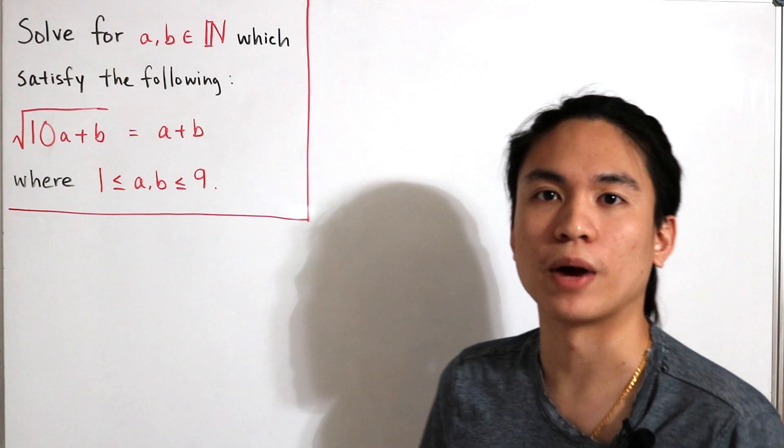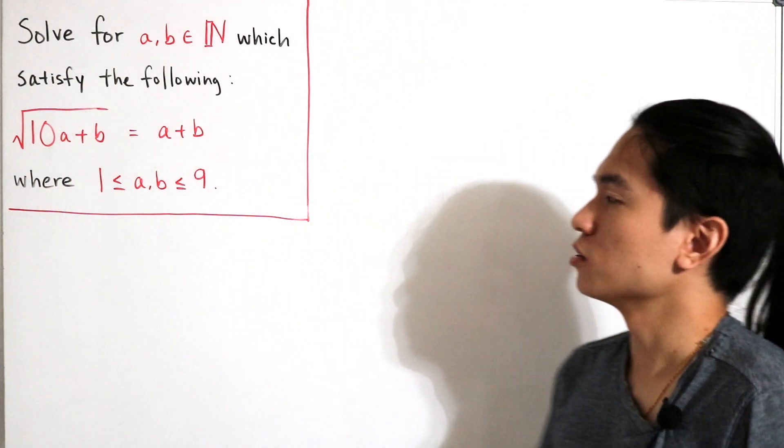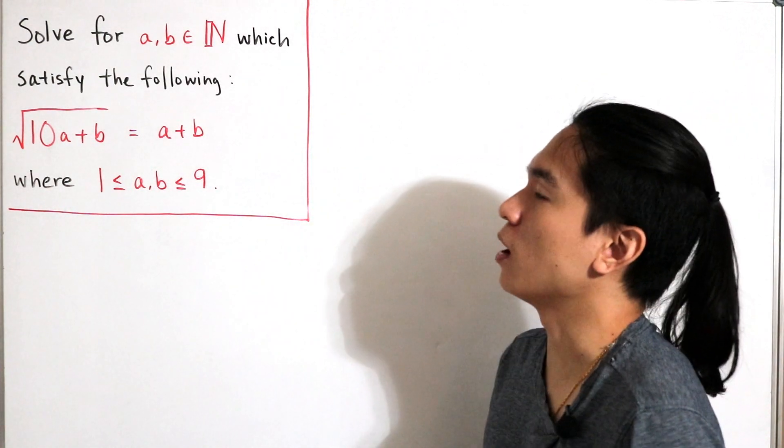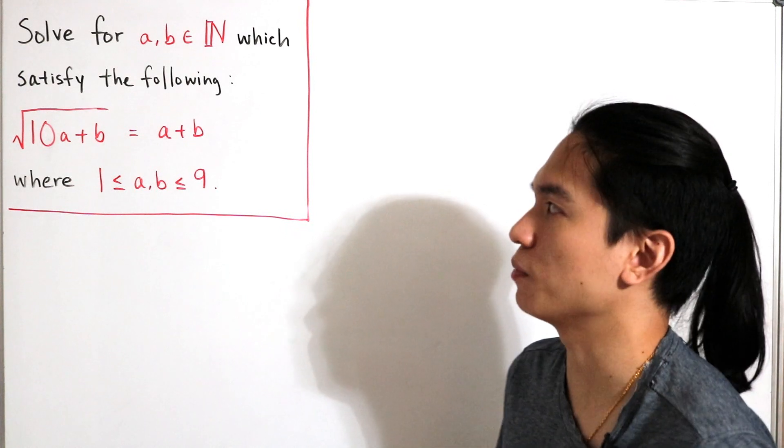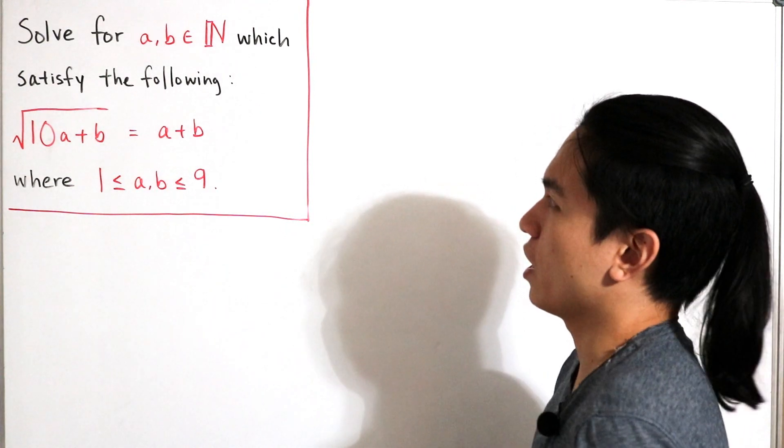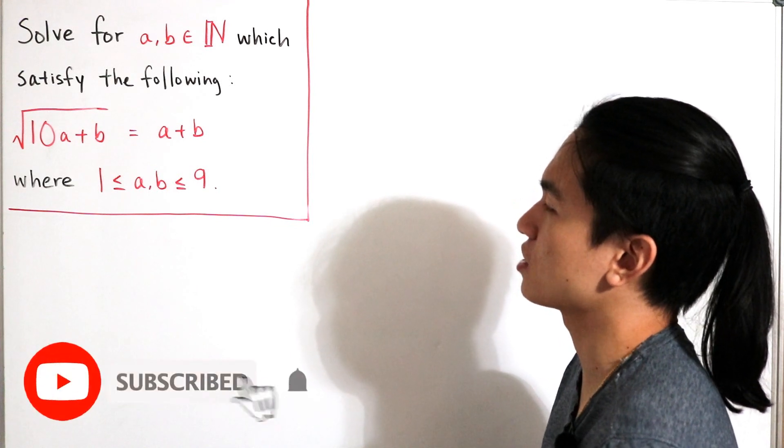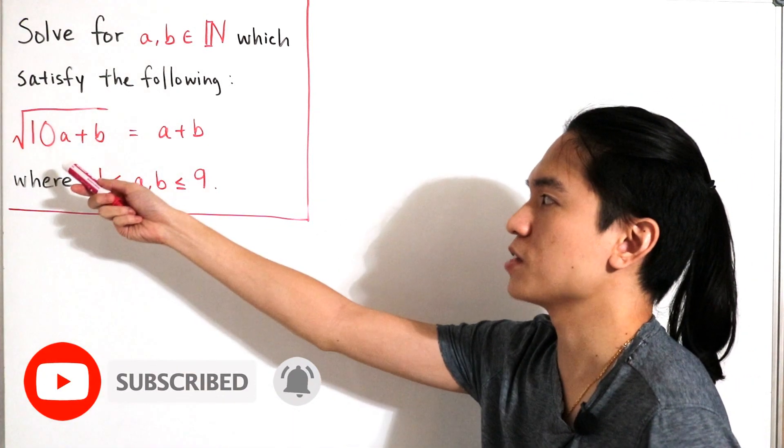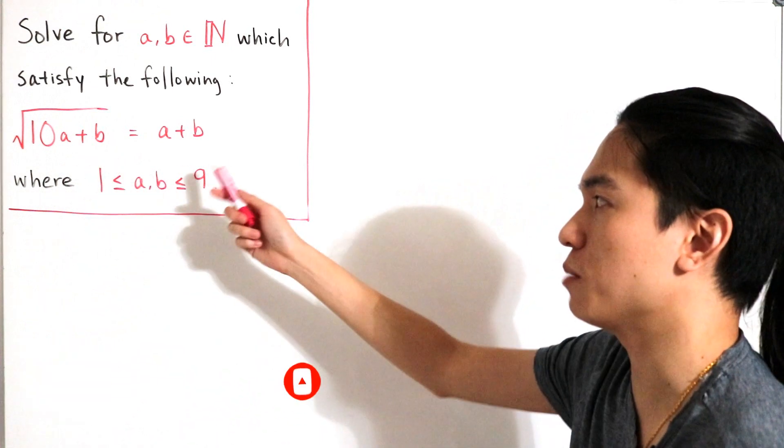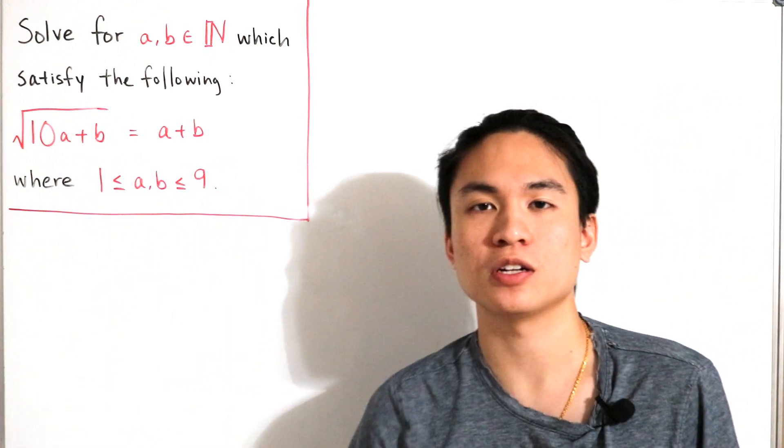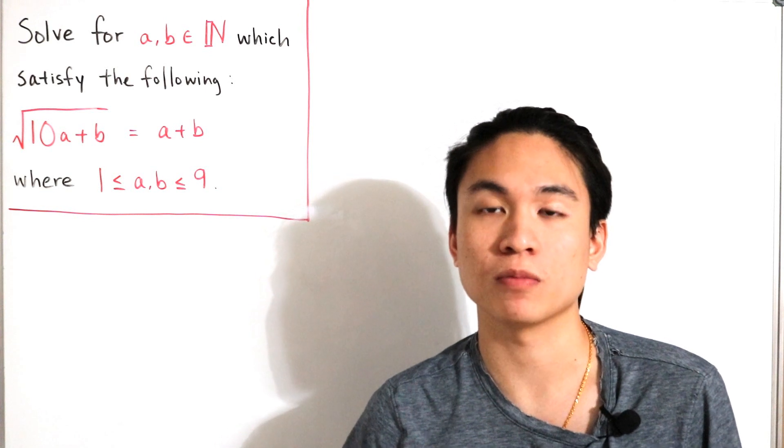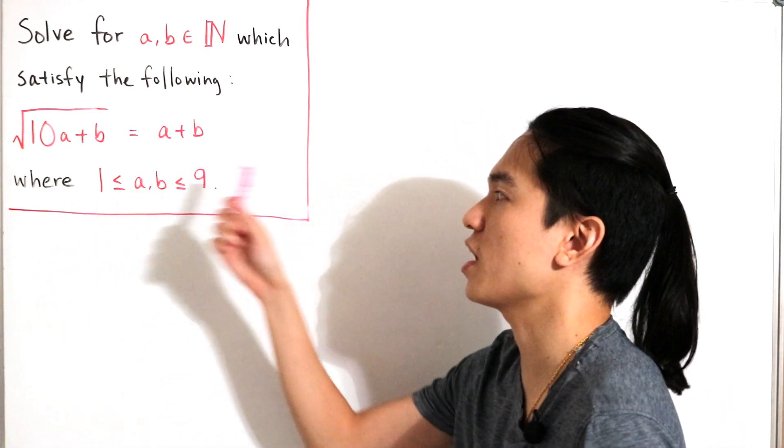Okay, so welcome back to another video. Here we have a number theory slash algebra problem, really number theory, and it's asking us to find natural numbers a and b that satisfy the following equation. The square root of 10 times a plus b is equal to a plus b, with the condition that a and b are natural numbers inclusive between one and nine.